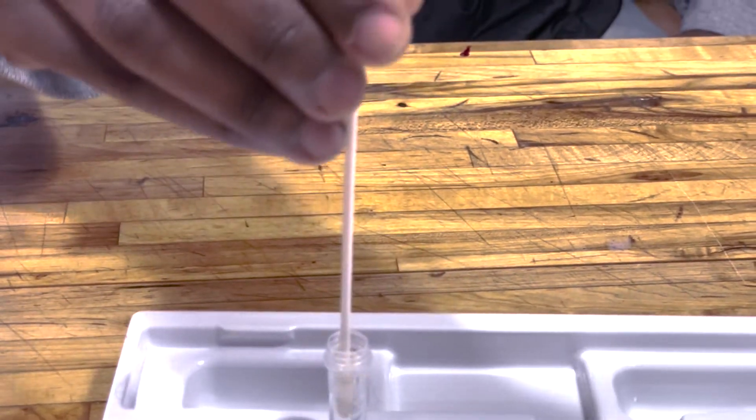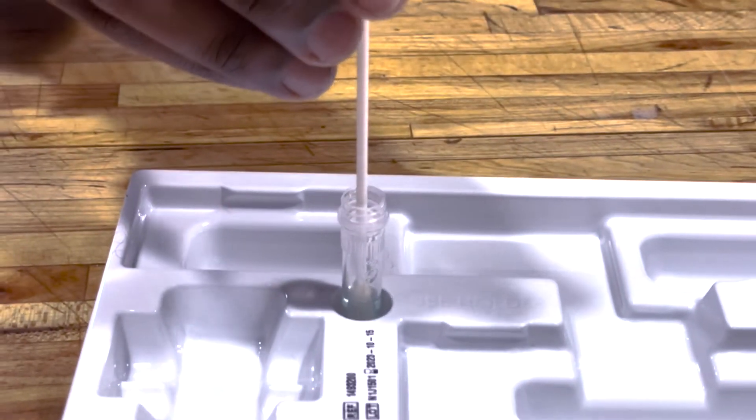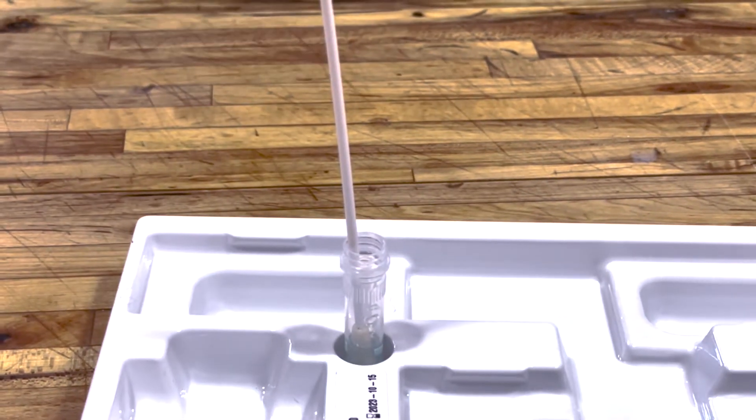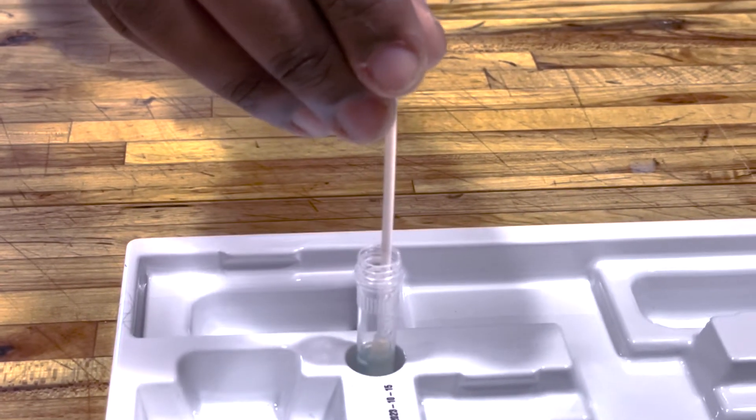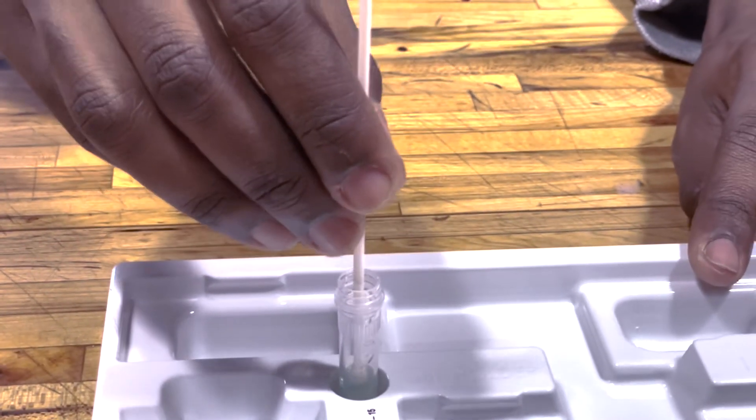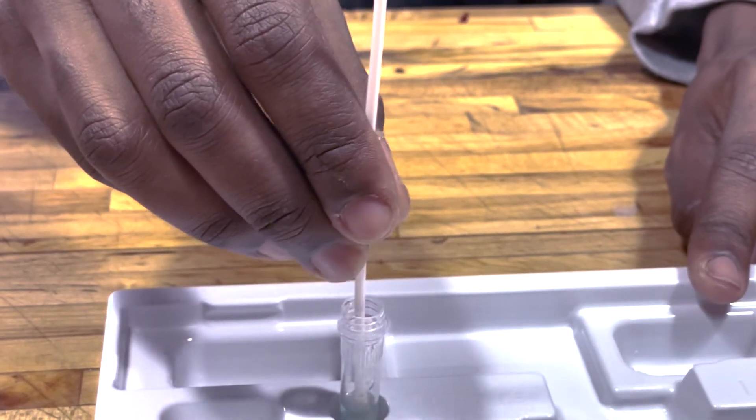Place the swab in the tube, making sure it touches the bottom. Stir it four times in the liquid. Leave the swab in the liquid for one minute.